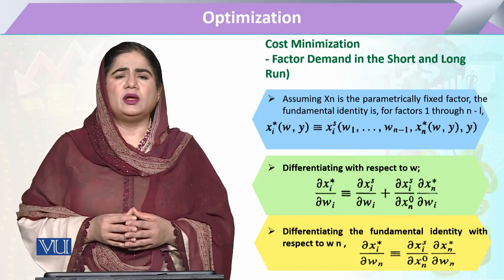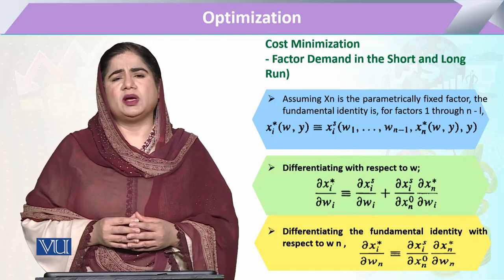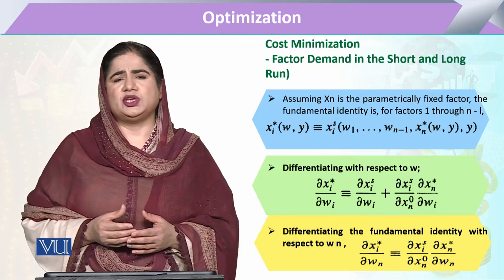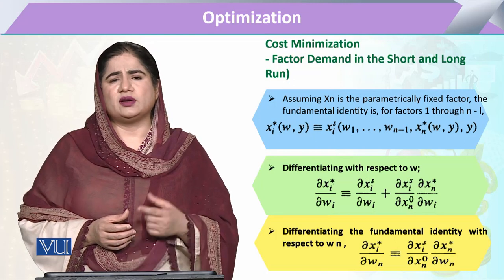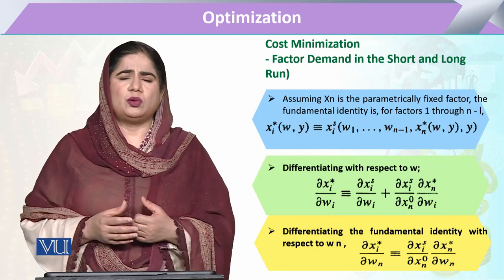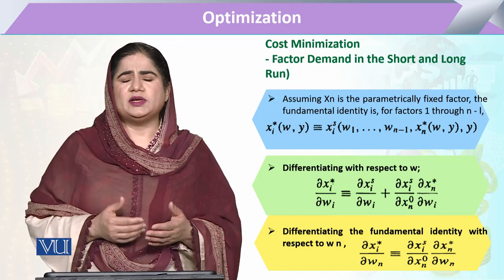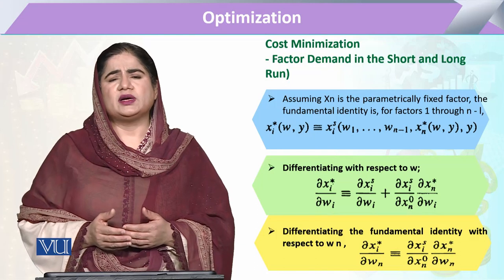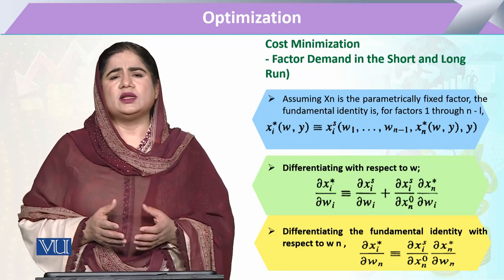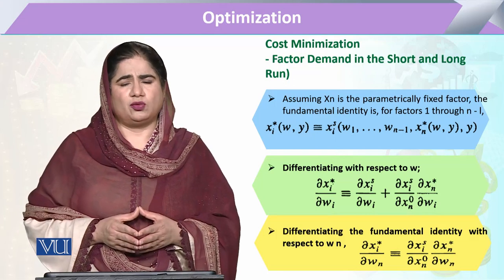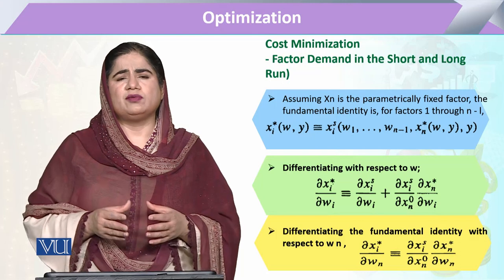The firm will change its factor demand — the factor that is now more costly, it will purchase a lesser quantity of that factor. But these adjustment processes can be different over time: for some products the quantity adjustment may be smaller and for others larger, and in the long run the demand curve will be different.